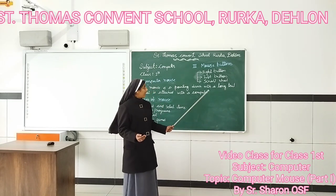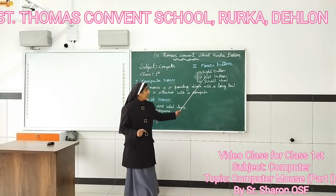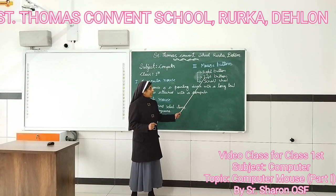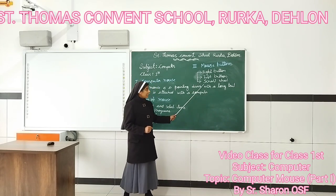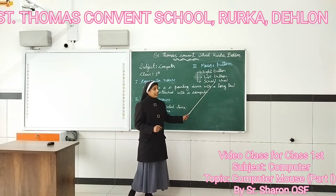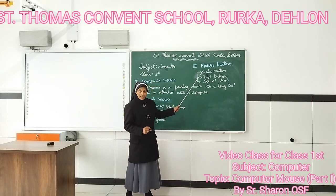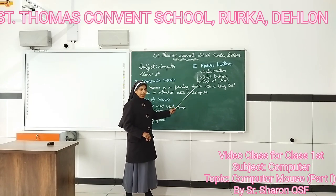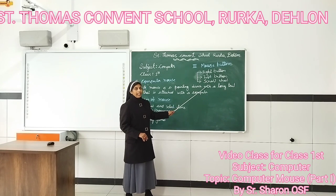What is the spelling of left button? L-E-F-T. Left. B-U-T-T-O-N. Button. Left button. What is the spelling of scrolling? S-C-R-O-L-L. Scroll. How many buttons are there in the computer mouse? There are 3 buttons: right button, left button, and scroll wheel.